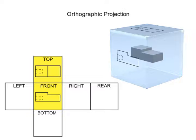For complex parts, two views may not be enough to show all the critical details. In those cases, views are added until all the details are adequately conveyed. Users of drawings must be able to visualize from the two-dimensional illustrations how the three-dimensional part will look.